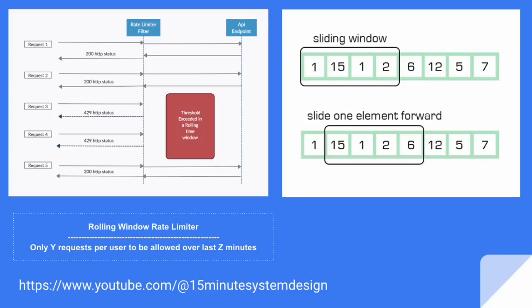So how are we going to do this? We are going to maintain a sliding window kind of mechanism internally, where for each user we are going to track for the last Z minutes how many requests we have allowed so far. For each minute, we are tracking the current number of requests we are allowing, and also tracking the total number of requests so far in this rolling window.